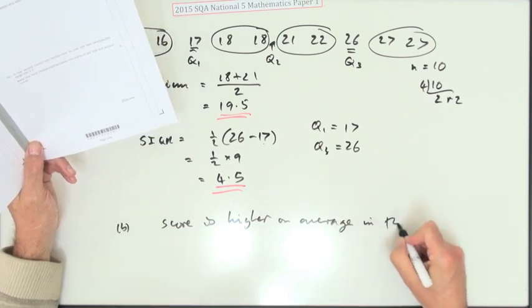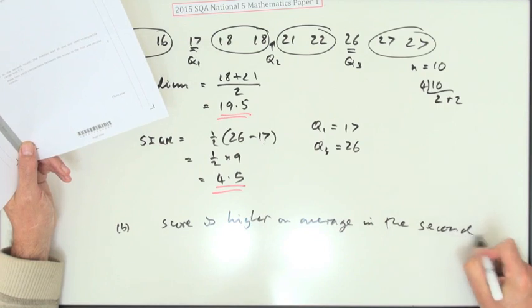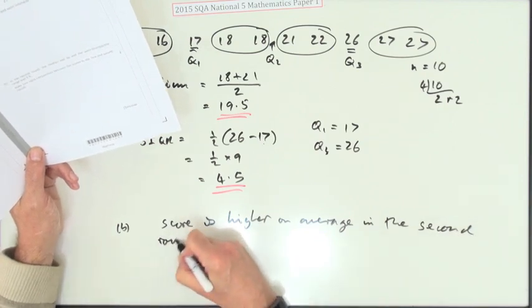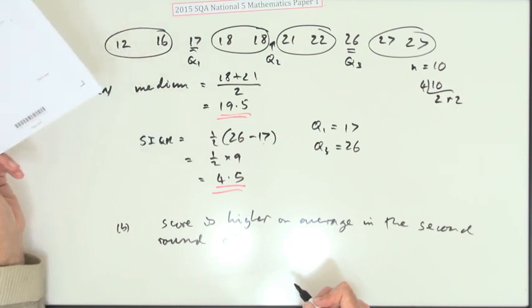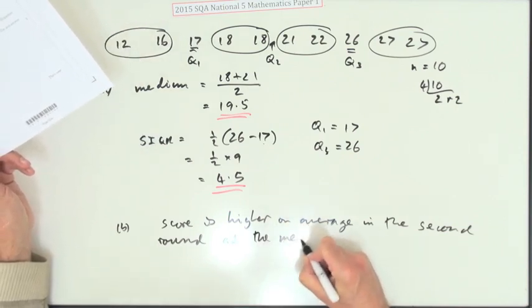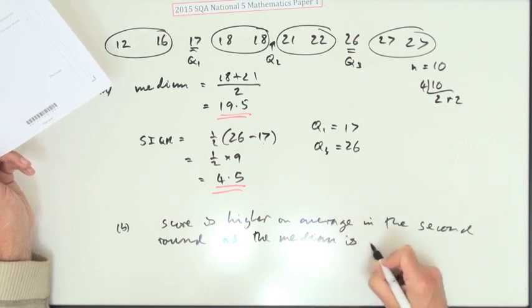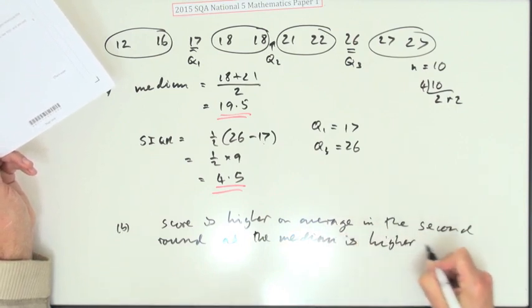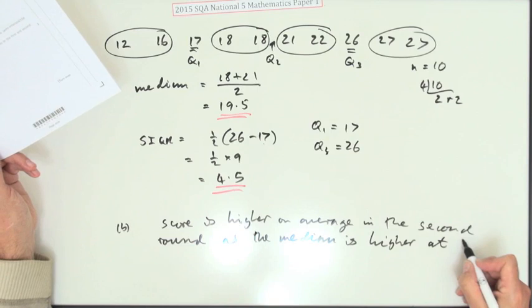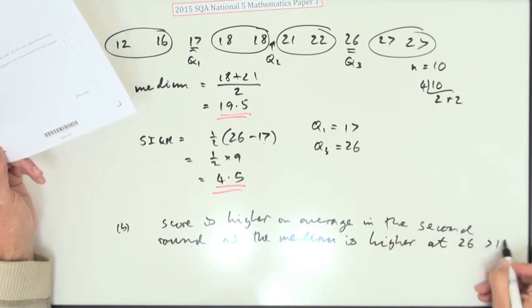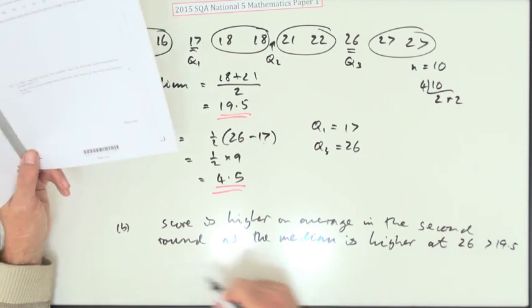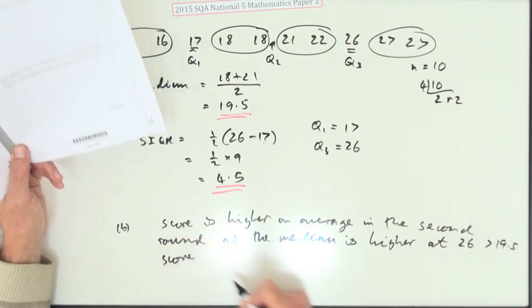In the second round. What tells you that? Is it the median or the quartile range? No, it's the median. As the median is higher at 26, which is greater than the original 19.5.